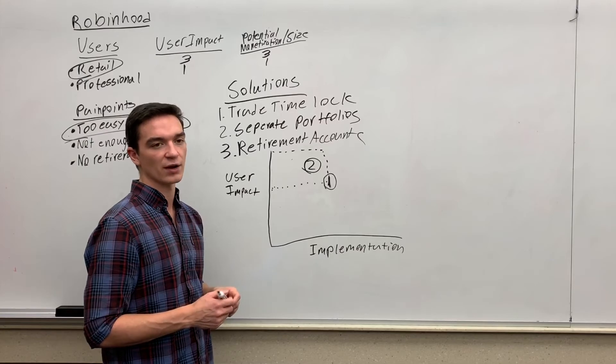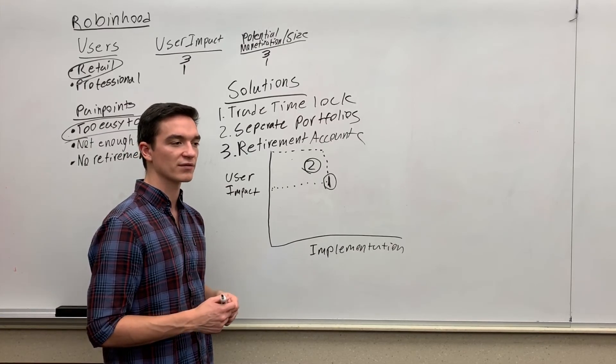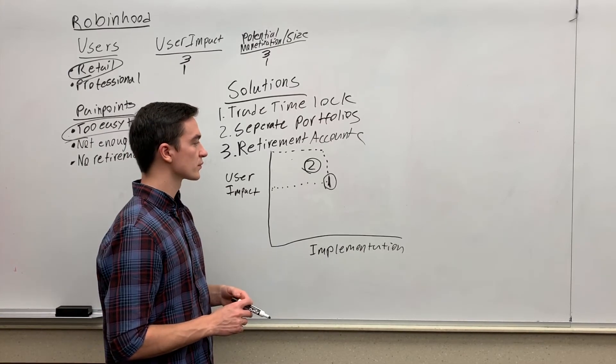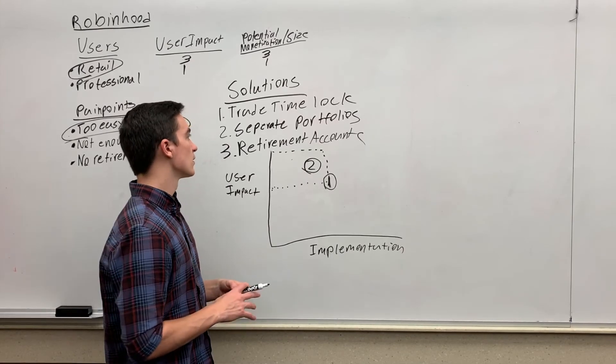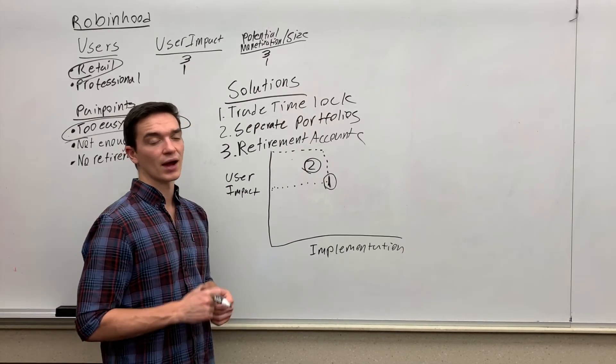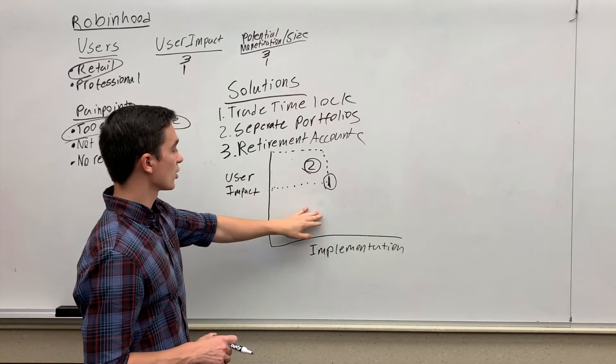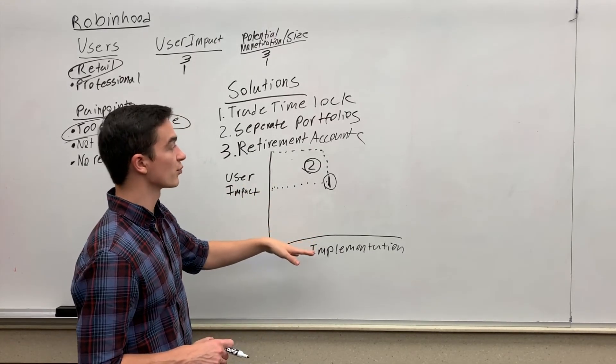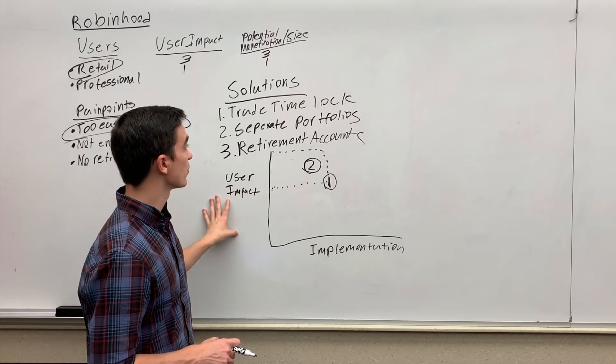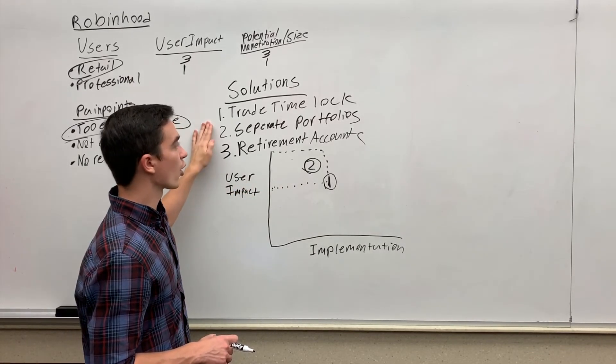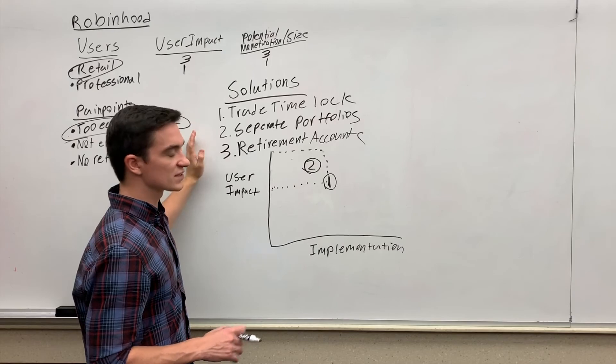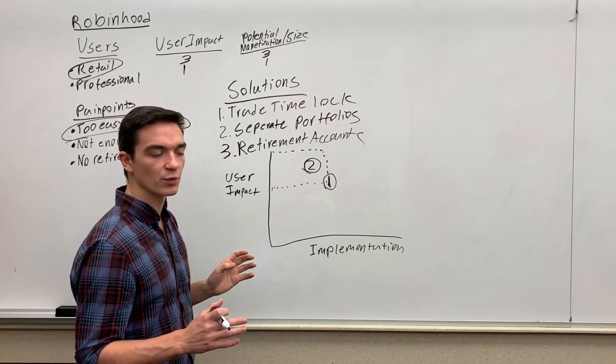But I don't think people are really going to Robinhood for retirement accounts. A lot of people go here to learn about investing, and I think it's a great idea. I don't necessarily know if it targets our pain point well. So I'm going to say it's harder to implement, and I'm going to say the user impact is on par with trade time lock, because I think they solve the problem in two different ways. But ultimately we still know that separate portfolios is better.